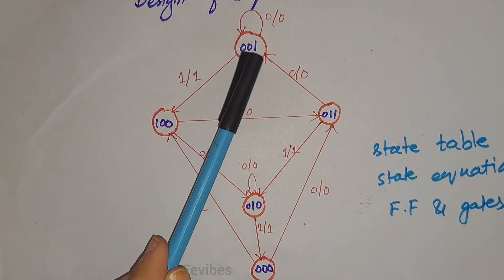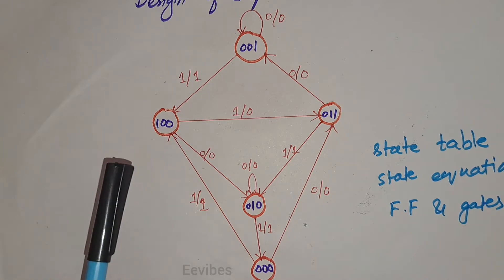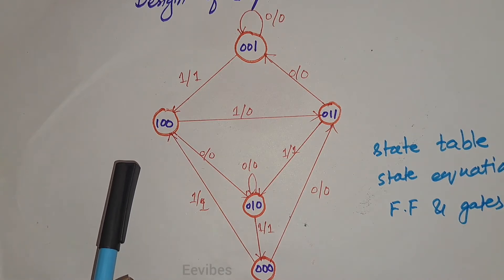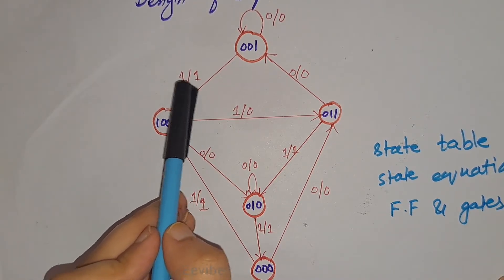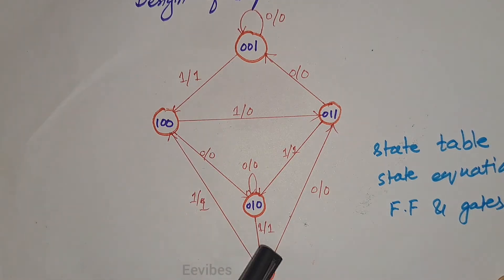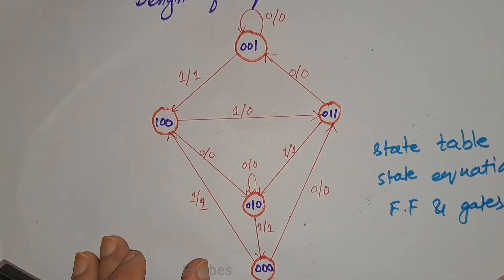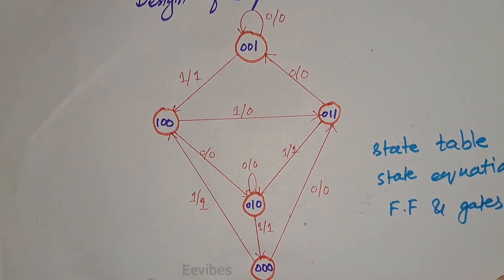In this particular circuit, three flip-flops are used because each state has three possible values such as 1-0-0, 0-1-0, 0-0-1, and more. There is one input and one output involved. Many other states for the three-bit combination are not used, so we will treat those states as don't-care conditions.